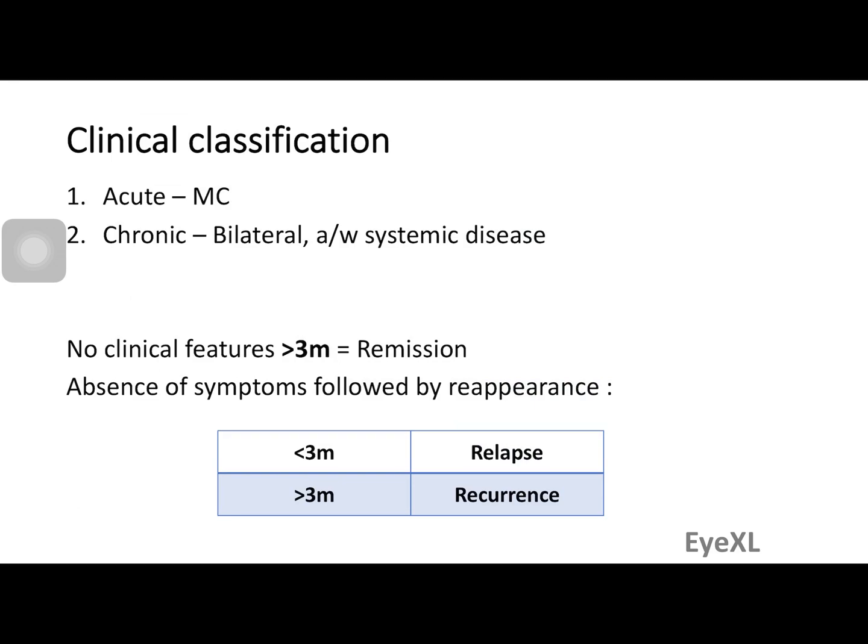Distinguishing acute from chronic is a clinical diagnosis — there is no fixed cutoff, but we generally consider four weeks as the threshold across medicine. Beyond four weeks would lean toward chronic.